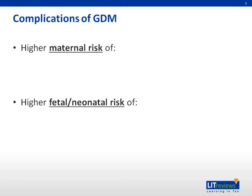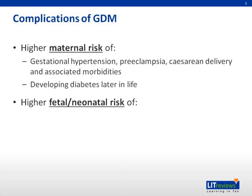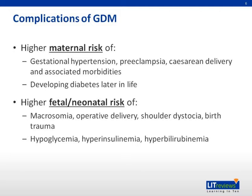The complications of GDM can broadly be classified into maternal and neonatal. Maternal risks include gestational hypertension, preeclampsia, C-section and associated morbidities, as well as developing diabetes later in life. For neonates, there could be macrosomia, operative delivery instead of normal vaginal delivery, shoulder dystocia, and birth trauma. Metabolic outcomes include hypoglycemia, hyperinsulinemia, and hyperbilirubinemia.